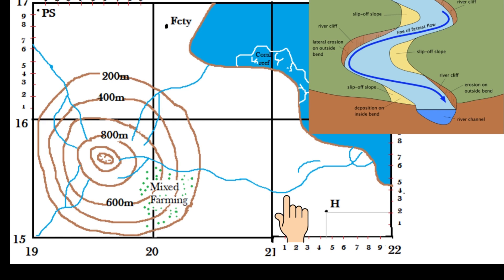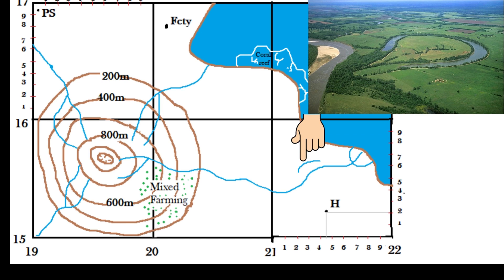Notice at 2115 or within 2115 that there is a part of the river which has been completely cut off from the rest. This is called an oxbow lake and is formed from the migration of the meander.